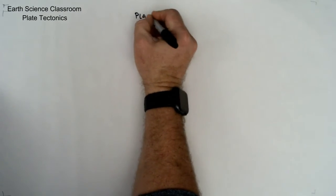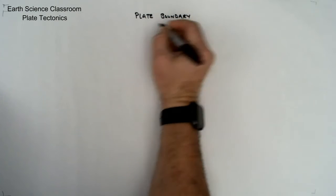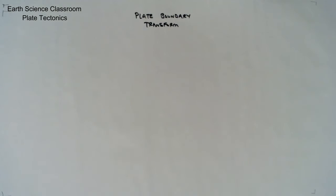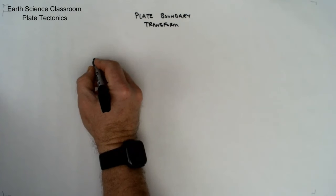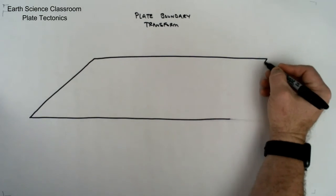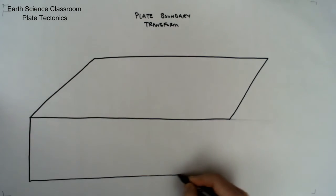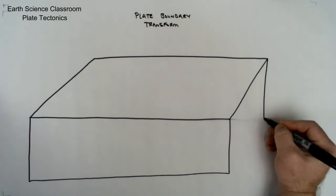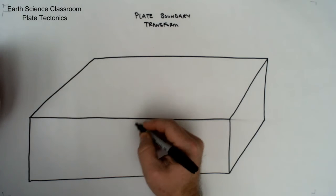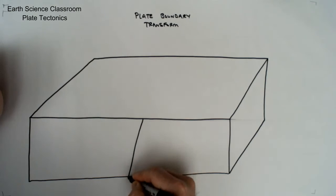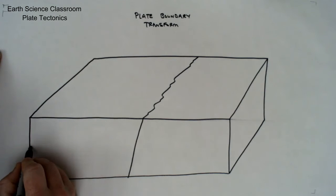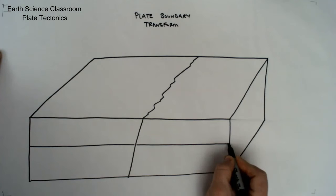In this video, we're looking at plate tectonics and plate boundaries, focusing on the transform plate boundary. This is different to the previous boundaries covered, looking at how two or more plates move relative to each other and create different features on and under the Earth's surface.